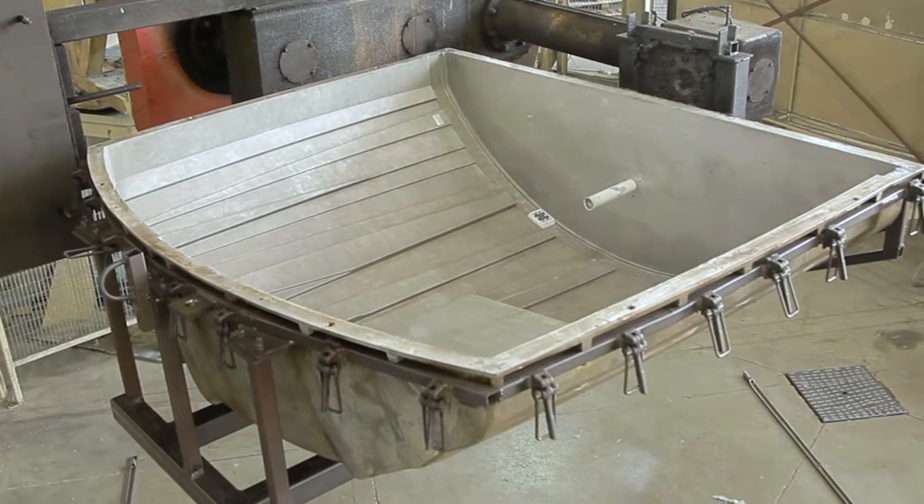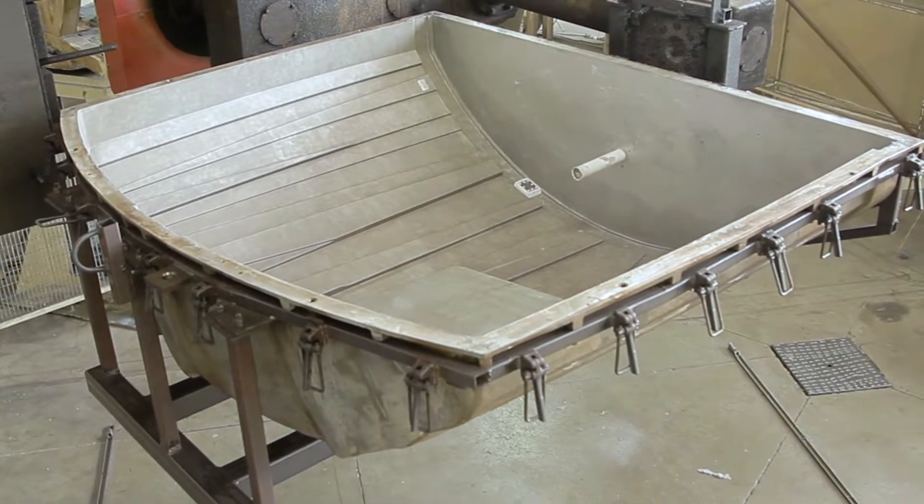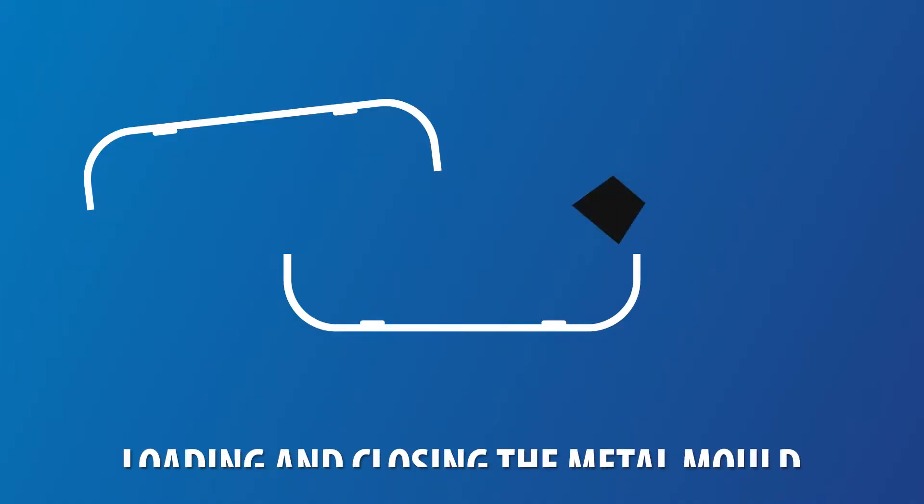The mould generally consists of two parts, one fixed and one movable. The former is filled with a plastic powder and the latter seals the mould.